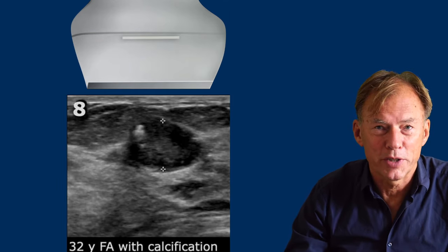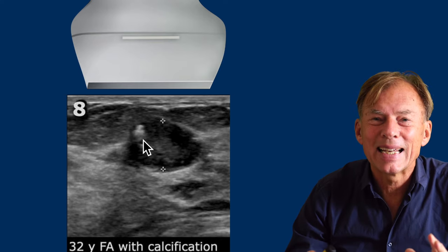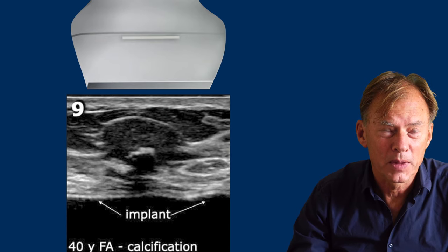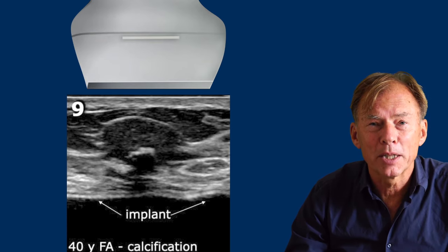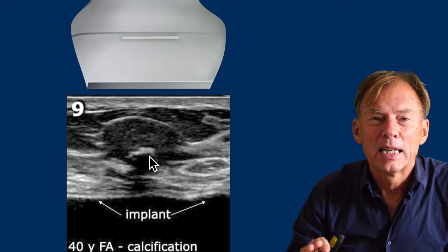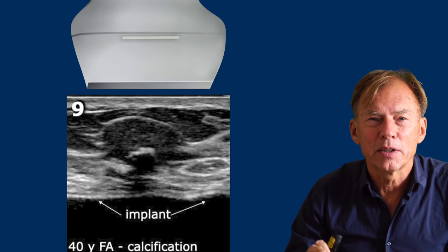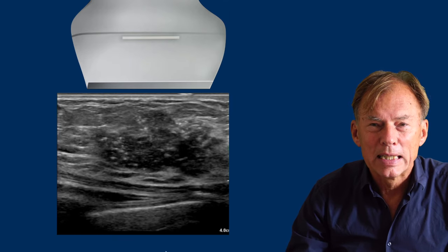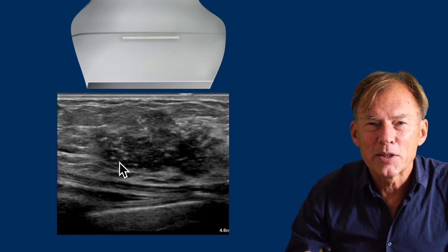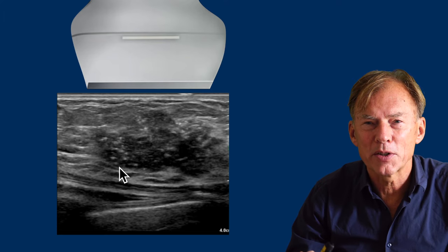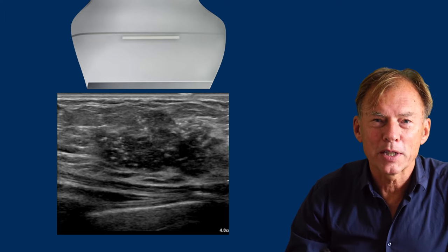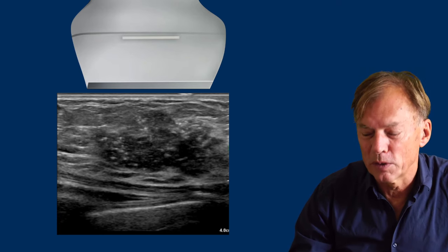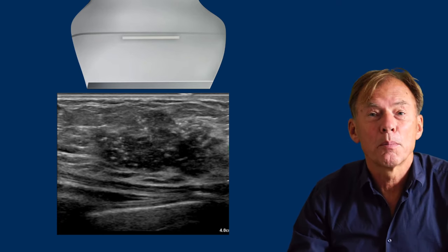Fibroadenomas sometimes have calcifications, but these are larger than the small calcifications we encounter in carcinomas. Here is a typical fibroadenoma with a gross calcification. These calcifications are different from the very tiny microcalcifications seen in breast cancer, which are sometimes not visible on ultrasound but only on a mammogram.